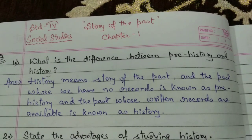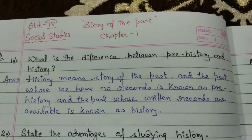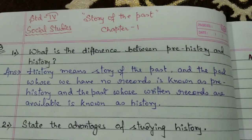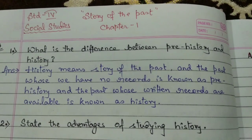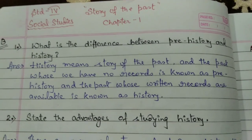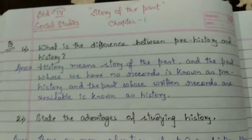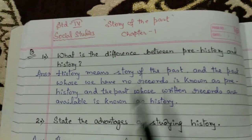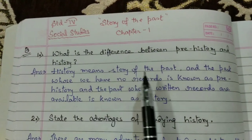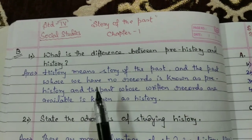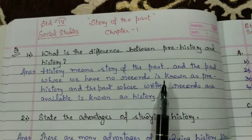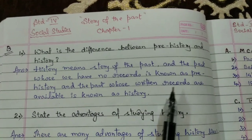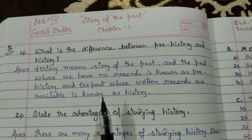Here we are with the question answers. Standard 4, Social Studies, Story of Past, Chapter 1. First question: what is the difference between prehistory and history? History means the story of the past. The past for which we have no records is known as prehistory, and the past whose written records are available is known as history.